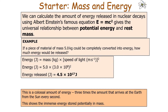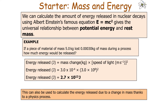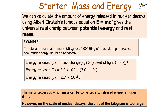We can calculate the amount of energy released in nuclear decays using E equals mc squared, which gives the universal relationship between potential energy stored in an object and its rest mass. For example, if a piece of material of mass 5 kilograms could be completely converted into energy, we get E equals mc squared and the answer is 4.5 times 10 to the 17 joules — a colossal amount, three times the energy arriving at Earth from the Sun every second. More realistically, only a small amount of mass changes into energy. If a 5 kg material lost 0.000030 kilograms during a process, using the mass change gives 2.7 times 10 to the 13 joules.